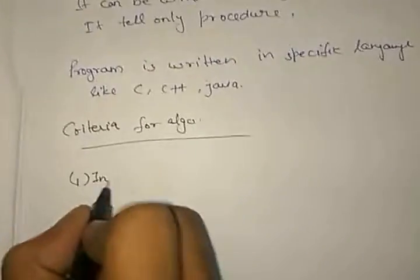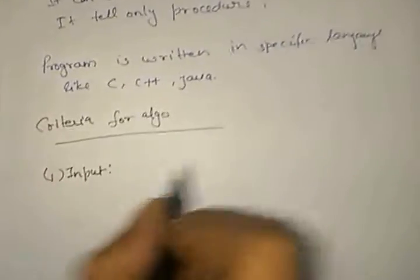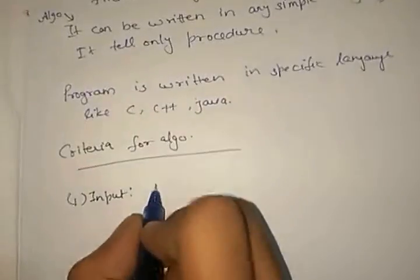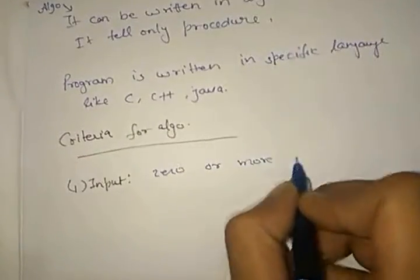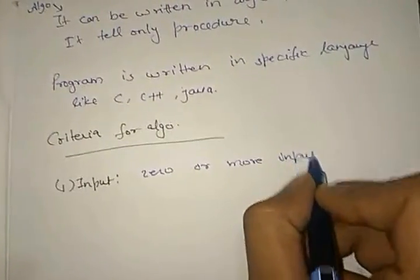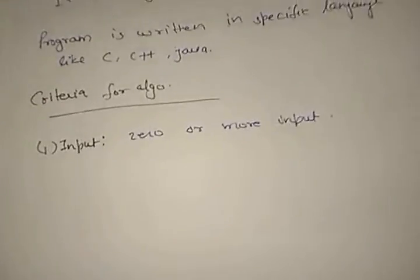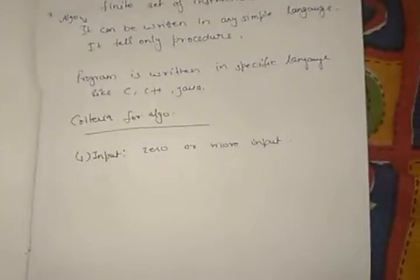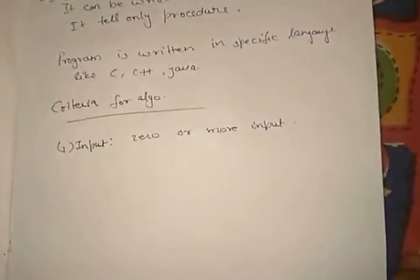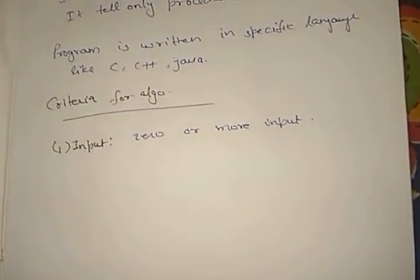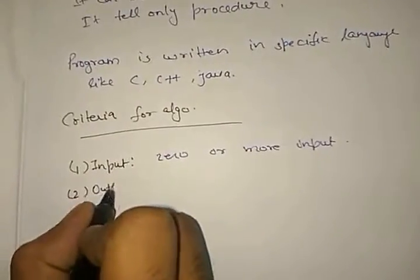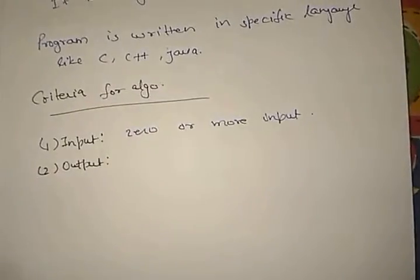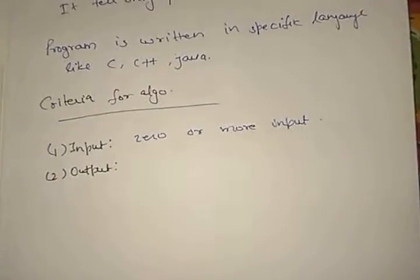The first criteria for an algorithm is input — you should take zero or more inputs. If you have to perform a specific task such as addition or multiplication, you will take an input from the user. The second criteria is output — an algorithm should produce a desired or specific output.